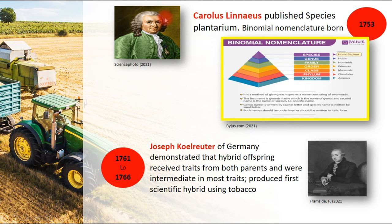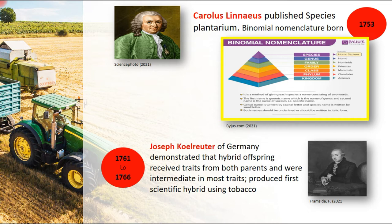Carolus Linnaeus published Species Plantarum, and during his time the binomial nomenclature was born. Binomial nomenclature is a method of giving each species a name consisting of two words — what we call the scientific name. The first name is the generic name, which is the name of the genus, and the second name is the species name. The genus name is written with a capital letter, the species name with a small letter, and both names should be underlined or written in italic form.